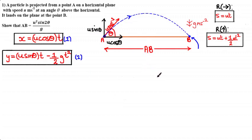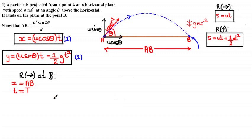Resolving horizontally at point B, taking rightwards as positive and using Equation 1: x equals AB, and the particle lands at some unknown time T. Substituting into Equation 1 gives AB = u cosine theta times T. This expression for AB doesn't yet match what we need to prove, so we now resolve vertically to find an expression for T, which we can substitute back.